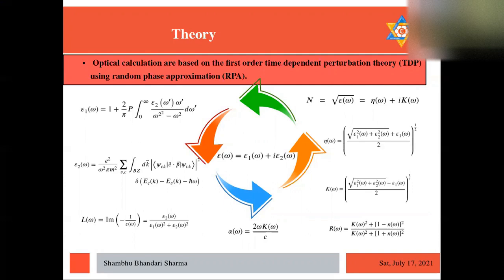For optical properties, we use TDDFT in RPA approximation in our calculations. And it is very simple. Here we calculate the epsilon or the dielectric function in terms of epsilon real and epsilon imaginary.